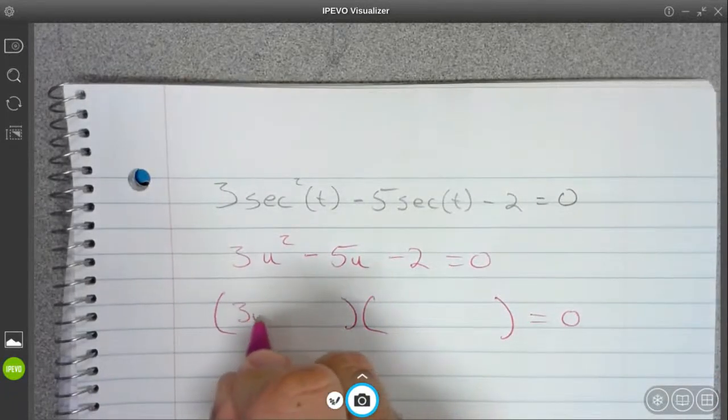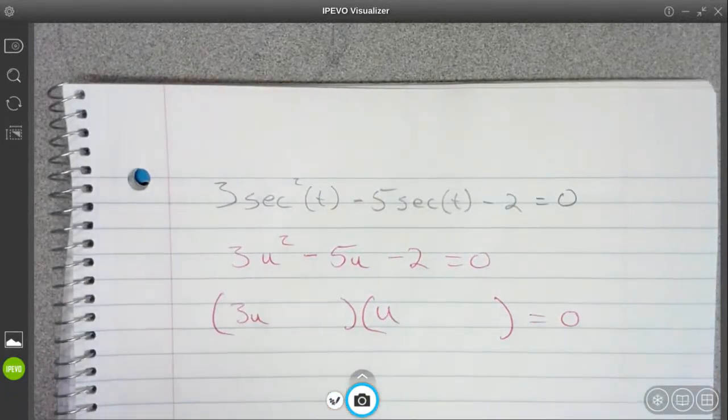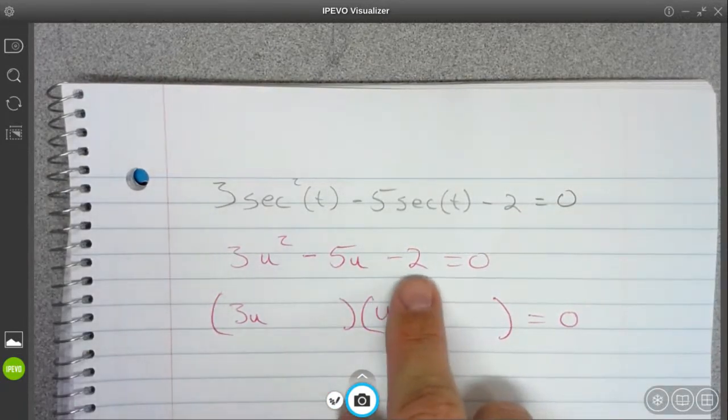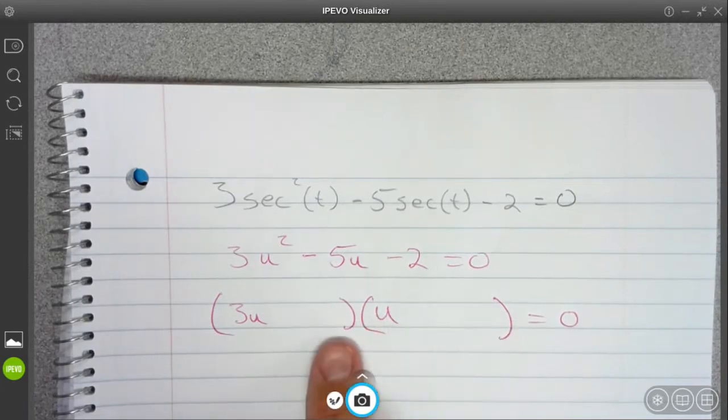It's got to be a 3u and a u in order to give us 3u squared. And in order to multiply to give us 2 right here, it can either be a 1 and a 2 or a 2 and a 1.